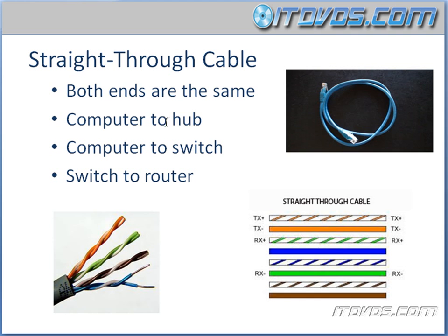We're going to connect a computer to a hub, a computer to a switch, or a switch to a router with this straight-through cable. Patch cables are your most common type of cable. It's important to note that technically the colors don't matter — what does matter is that both ends are the same. The first two wires are your transmit wires, and wires three and six are the receive wires.